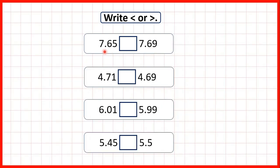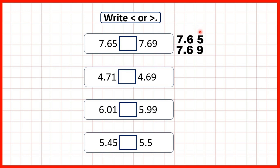Now we have 7.65 and 7.69. Writing the numbers out one below the other with the decimal points lined up, we can see that both have 7 ones and both have 6 tenths, but when we look at the hundredths, the number with 9 hundredths must be larger — so that's 7.69.